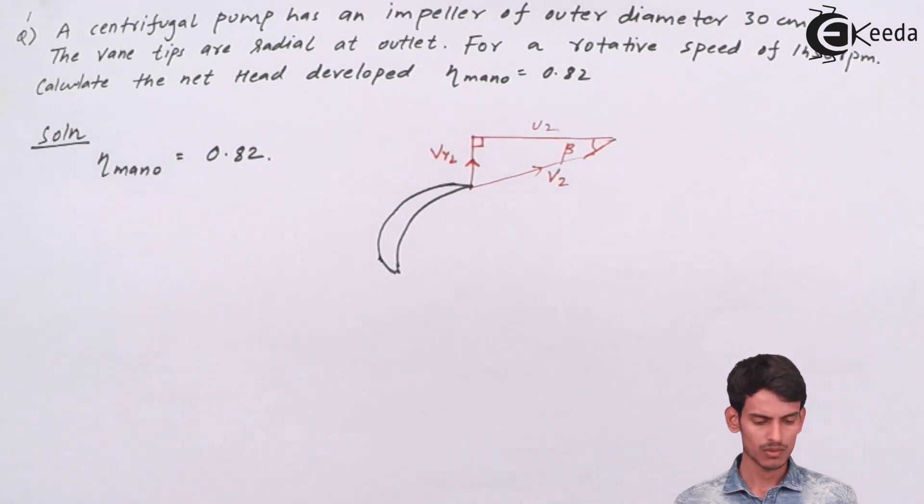So the question is talking about for a rotate speed of 1450 RPM, calculate the net head that has developed. Manometric efficiency is given.